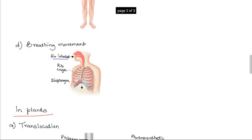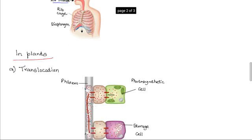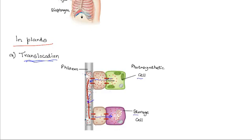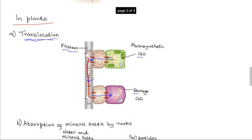In plants, the two main processes that consume energy are: first, translocation. In translocation, food produced from photosynthetic cells — either in the leaves or any other part with photosynthetic tissues — is translocated through the phloem to other parts of the plant, such as the roots where the food substance is stored. This translocation of products of photosynthetic cells along the phloem consumes energy derived from respiration.